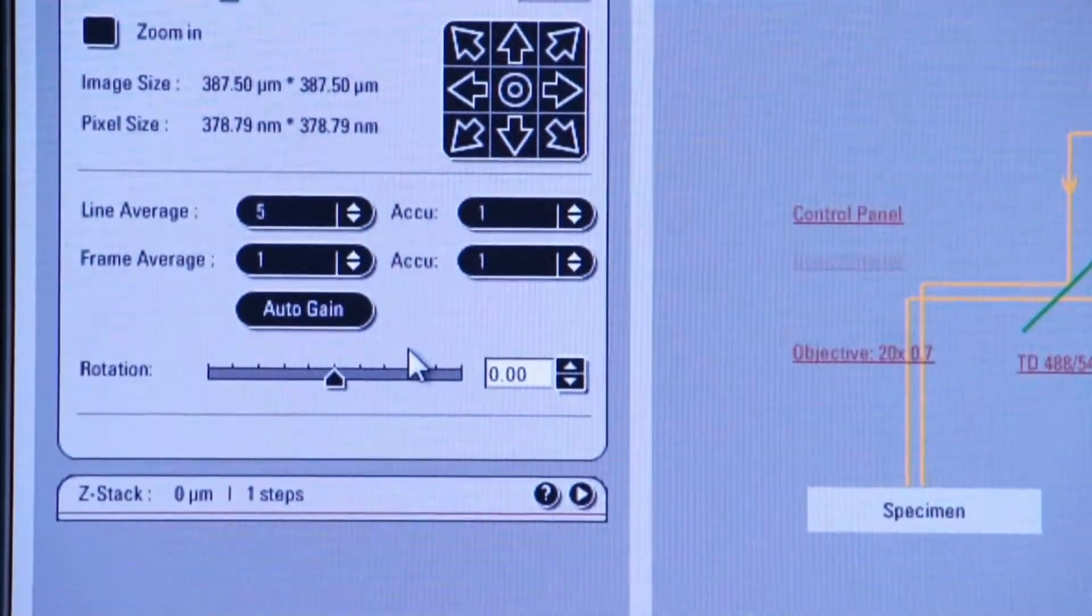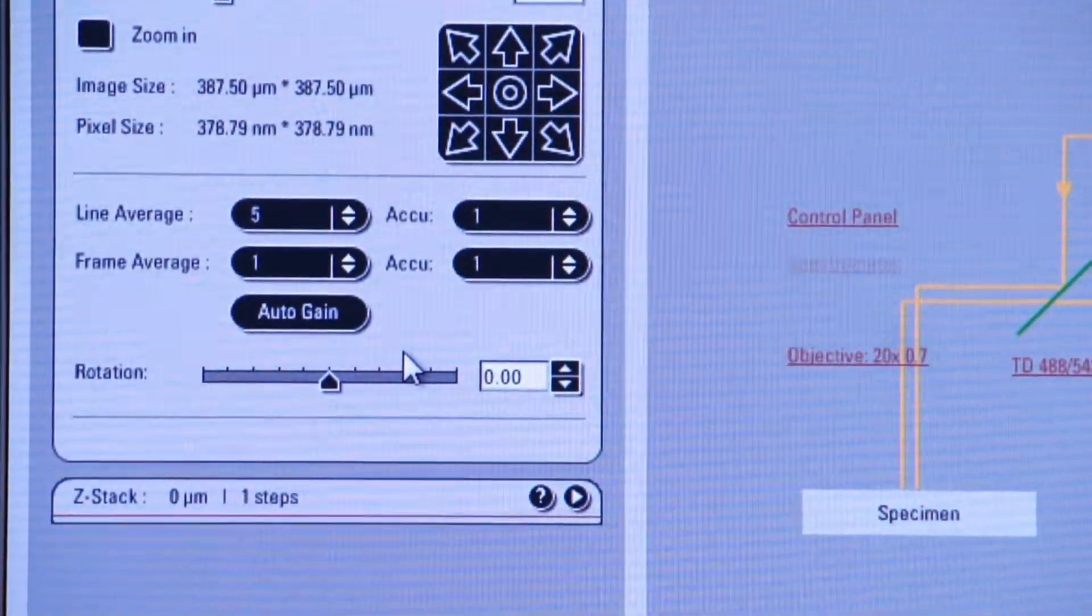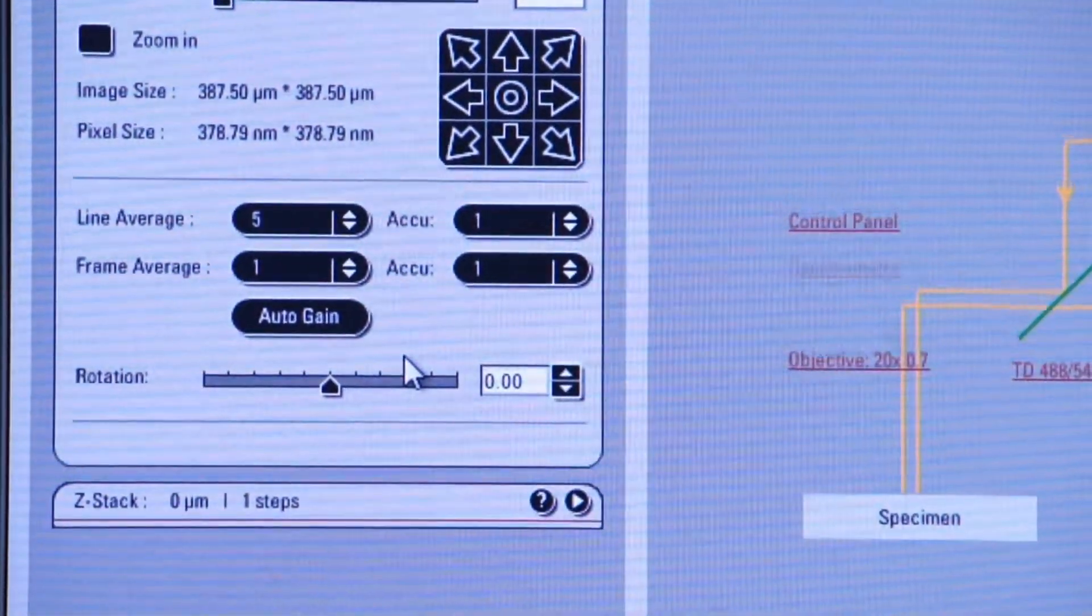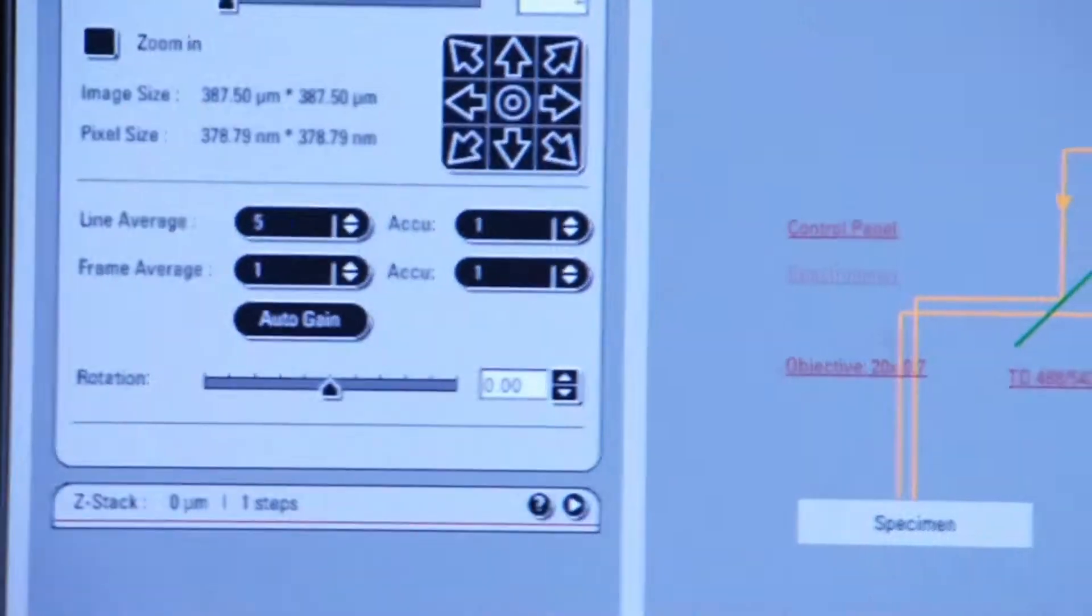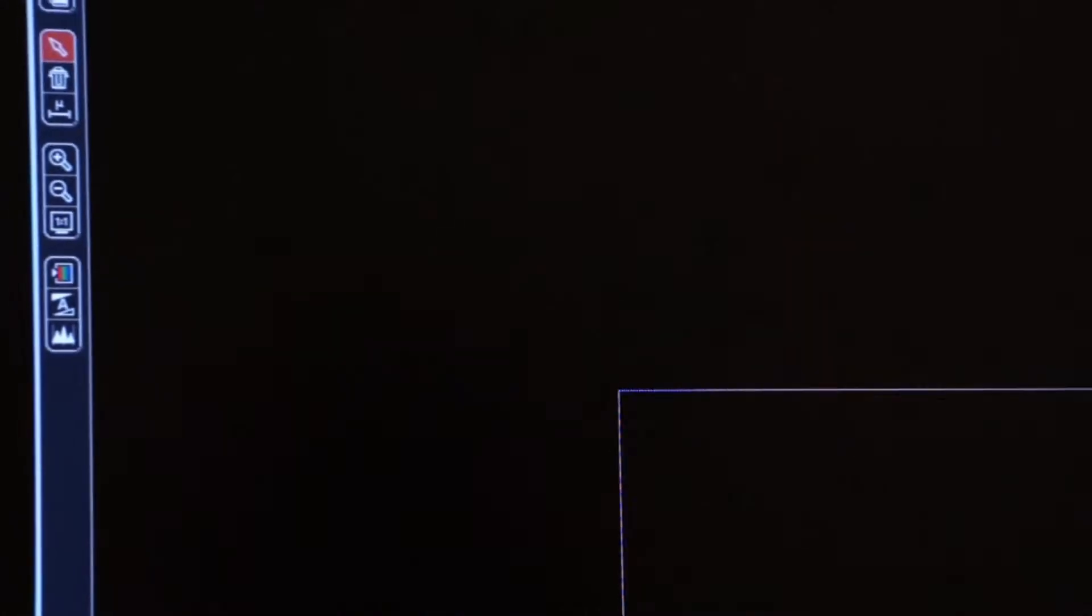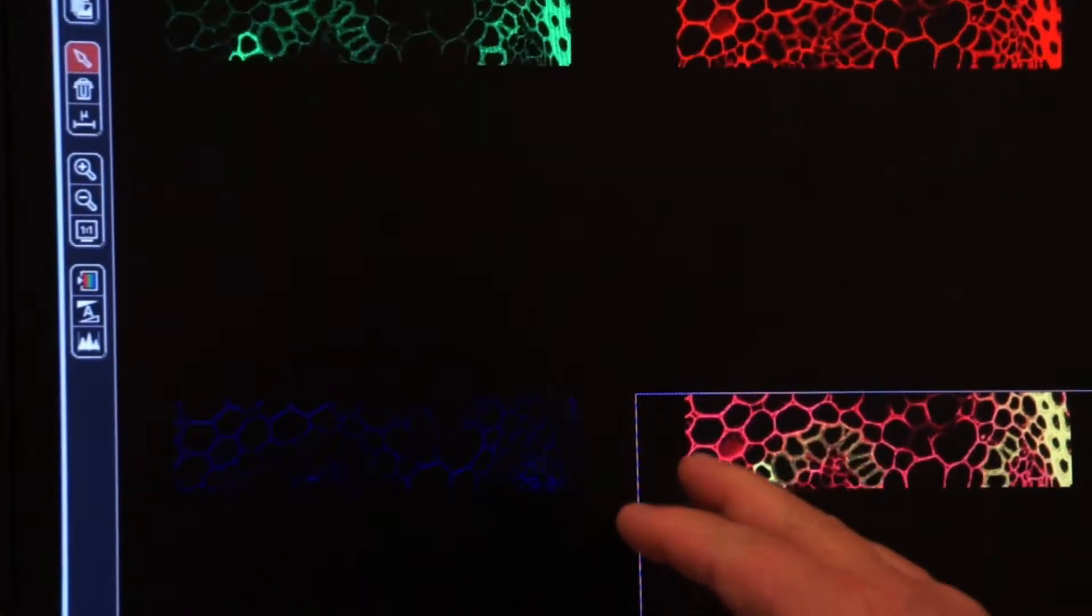Because we're scanning each line five times this will slow down. I'm going to click on capture an image and you can watch this screen here and you'll see the image being collected. Now you can see it's a little bit slower.